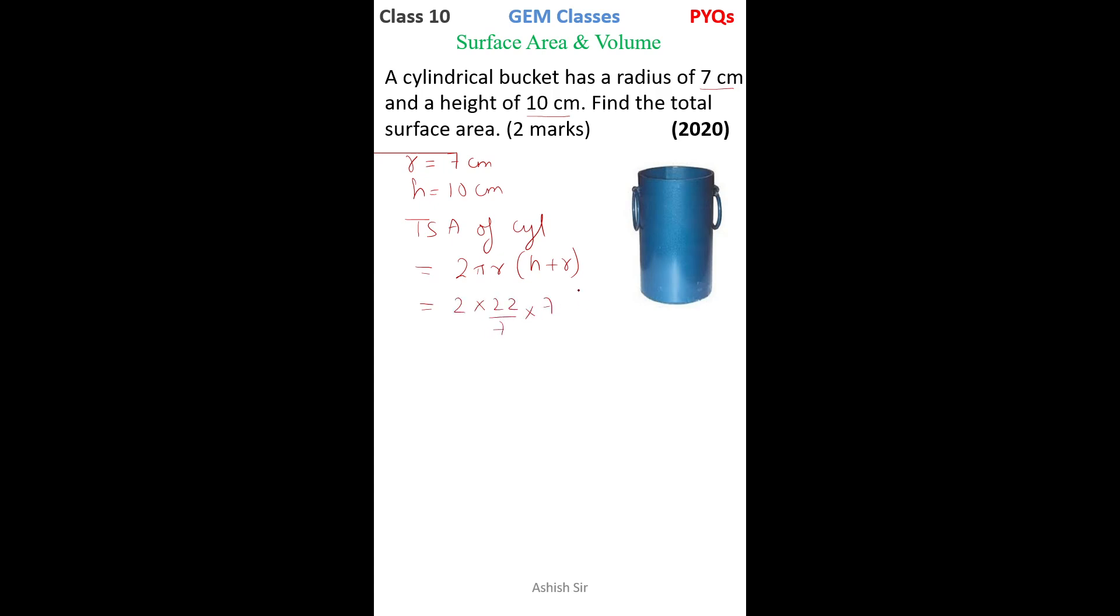So this 7 and 7 get cancelled, and what we have here is 2 × 22 × 17. So 2 × 17 or 2 × 22, anyway we can go. 44 × 17.